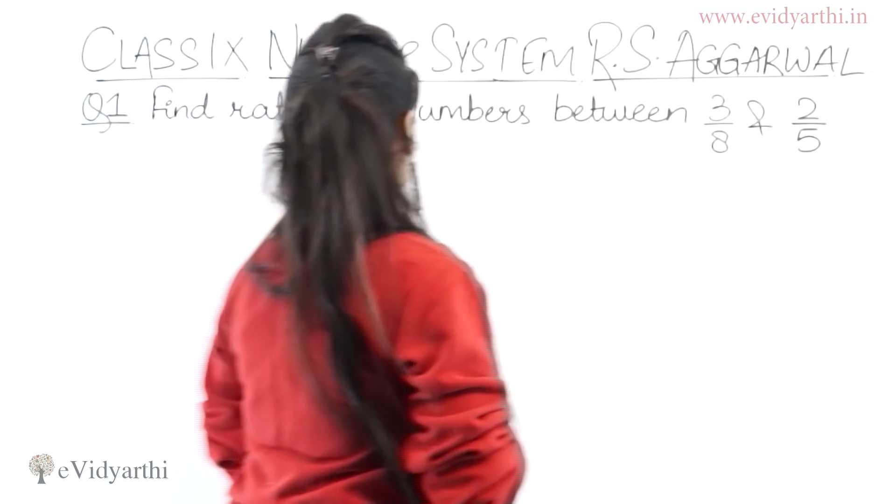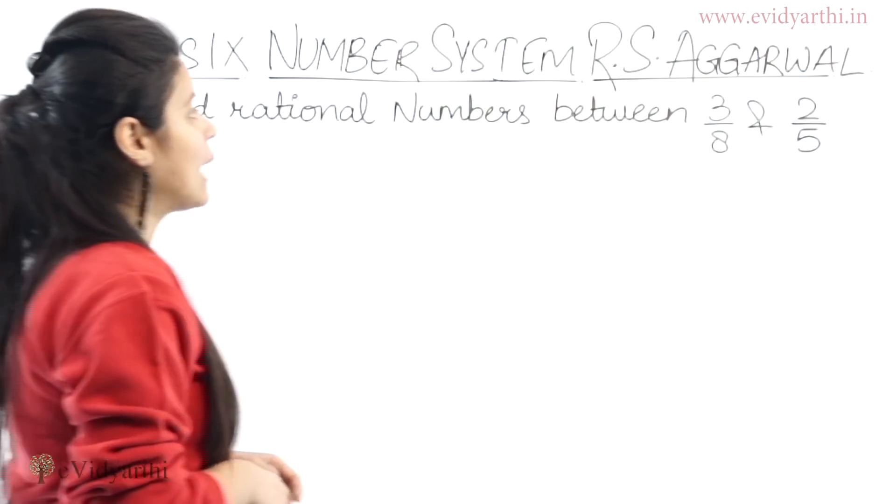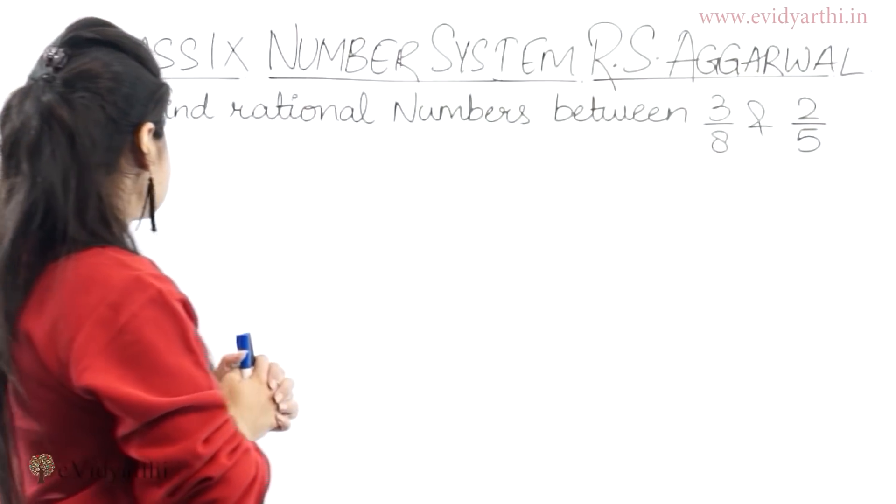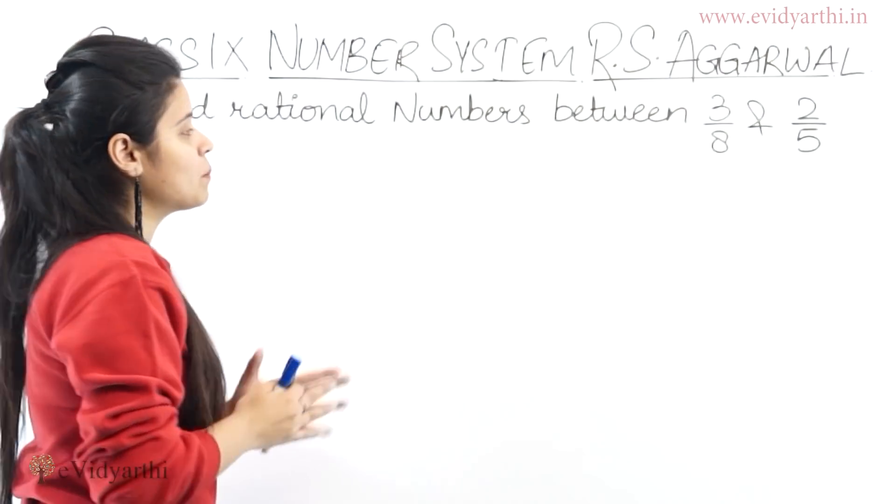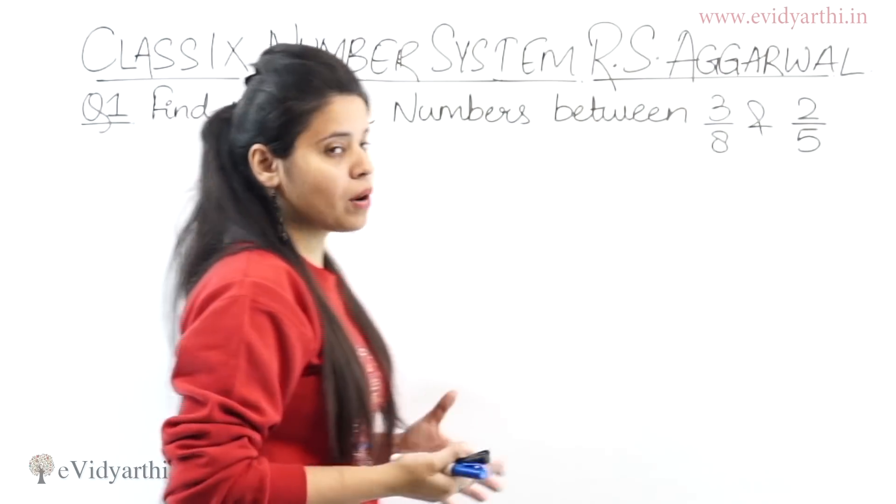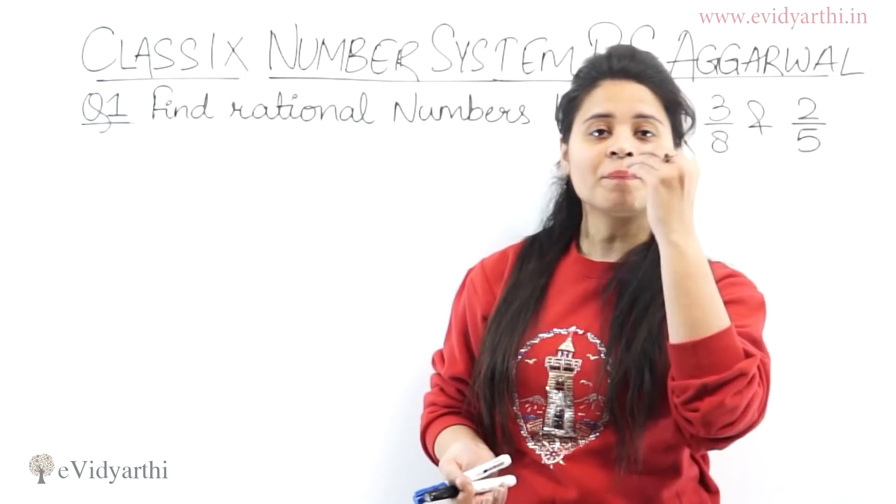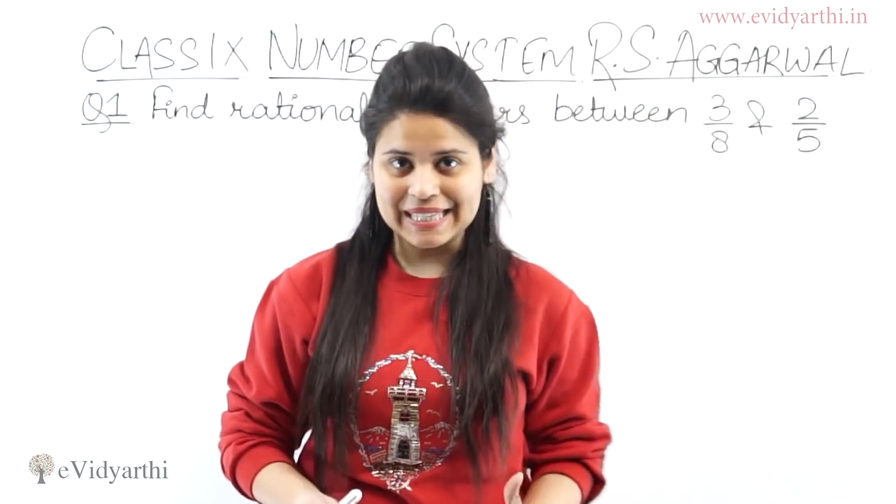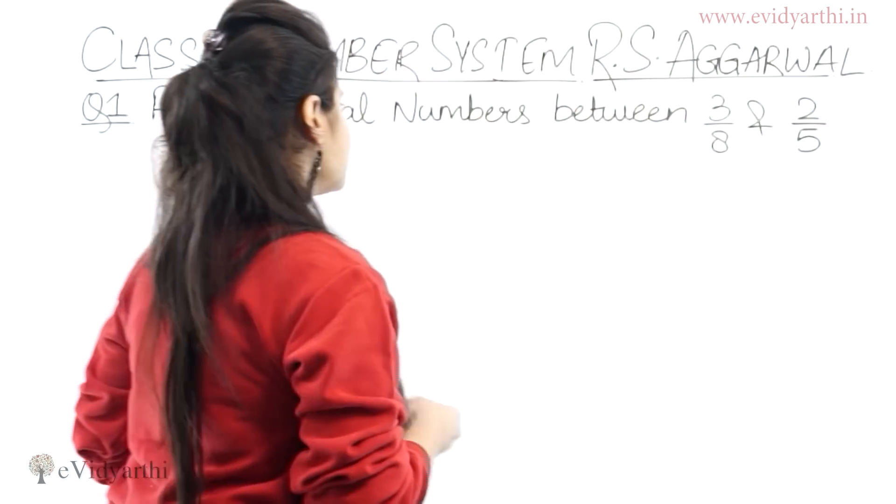Okay, so we are beginning with chapter number 1, which is number system and this is from RS Agarwal. The question says, find rational numbers between 3 upon 8 and 2 upon 5. Now this is a very basic question in NCERT. The most basic question you have is this. But let's start and solve this.